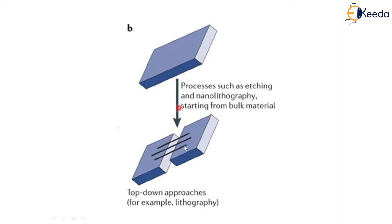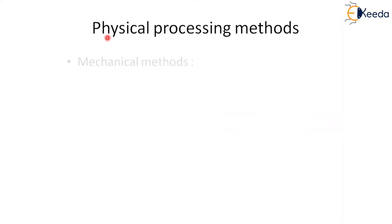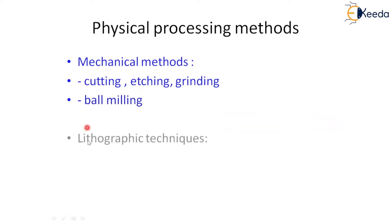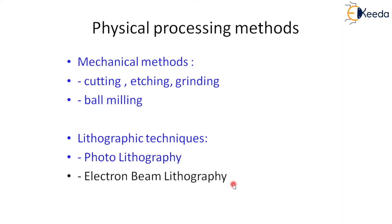Most of the time we concentrate on the top-down approach to make nanocomposites. This approach is generally called lithography. Physical processing methods are also used — mechanical methods such as cutting, etching, grinding, and ball milling are among the best. Lithographic techniques include photolithography and electron beam lithography.